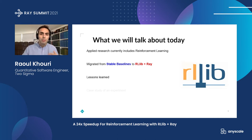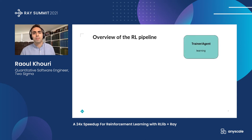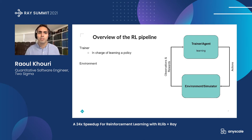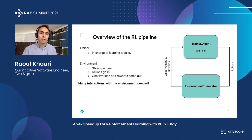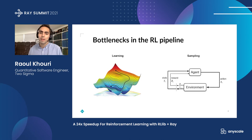First, let's talk about the RL pipeline — just a general overview so we have the same jargon. Normally you have what's called a trainer or an agent, and it's responsible for learning a policy, figuring out how to interact with the environment. It applies actions to some simulator or environment and receives observations and rewards. This environment is basically a state machine — actions go in and observations and rewards come out.